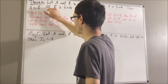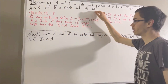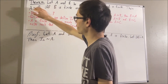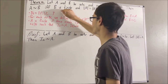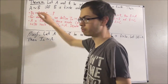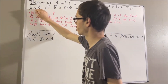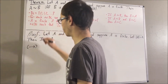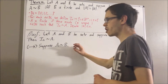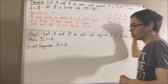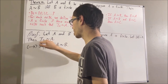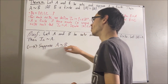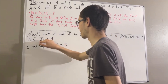We're trying to prove this is true if and only if this is true. Since we're proving a statement containing 'if and only if', we can prove if this is true then this is true, and then prove if this is true then this is true. Let's start by proving the forward direction. Suppose there exists a bijection from A to B. By our second fact regarding bijections, there's a bijection from I_n to A and there exists a bijection from A to B, therefore there exists a bijection from I_n to B.